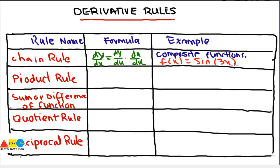Currently, just know the difference between these rules. Chain rule is for composite functions. Now we move towards the product rule.